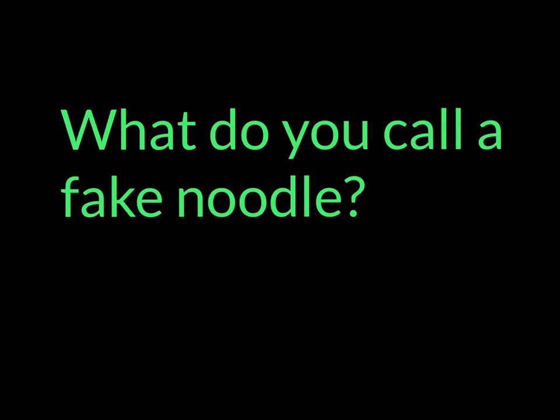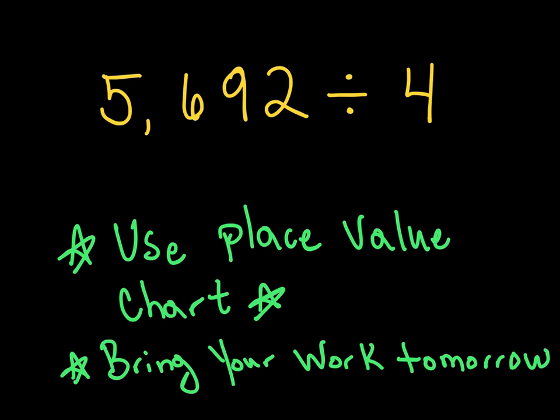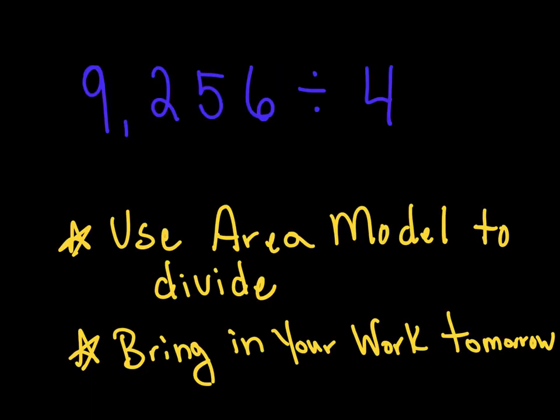What do you call a fake noodle? You've got to solve the next couple of questions to find the answer. First: 5,692 divided by 4 — use your place value chart and bring your work in tomorrow. Second: 9,256 divided by 4 — use an area model to divide, and I want to see your area models tomorrow.